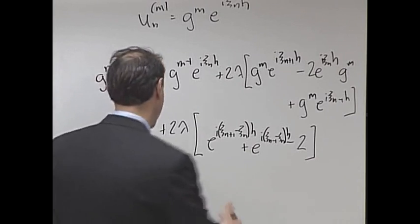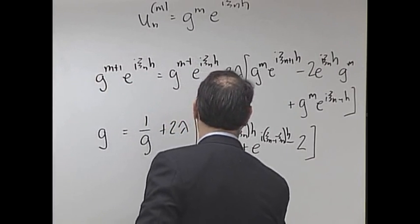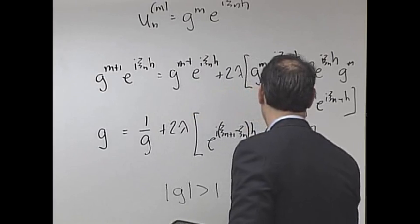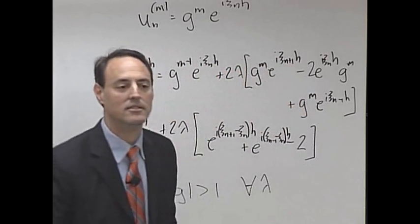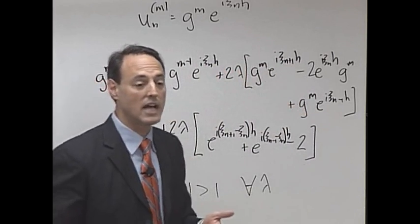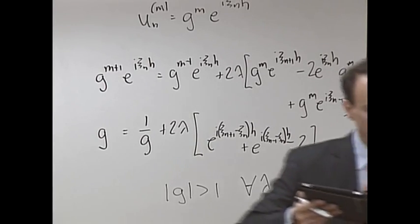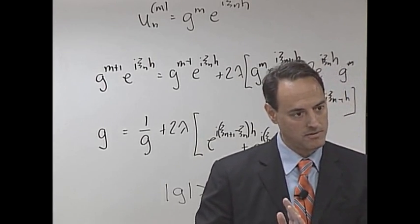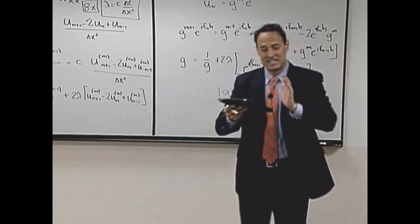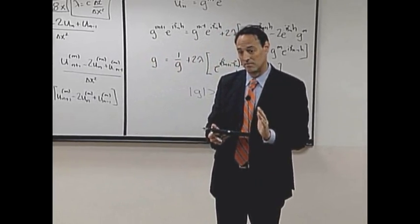What you're going to find is G is bigger than one for all lambda. So it turns out, if you do leapfrog with the heat equation, it's always unstable. So in other words, the one thing I want to point out with this is you have leapfrog, which worked great with the wave equation. Leapfrog sucks with heat equation.